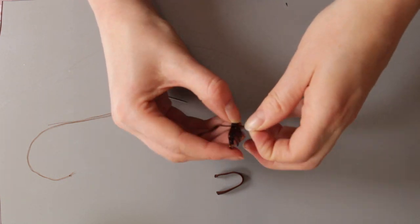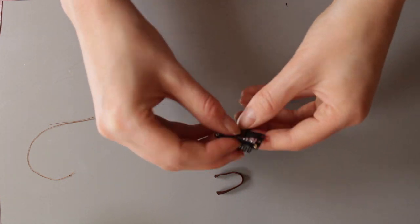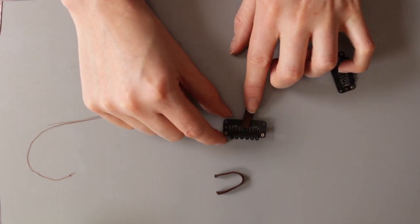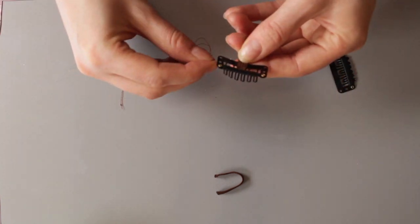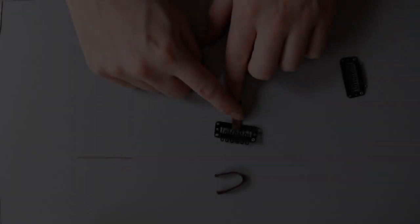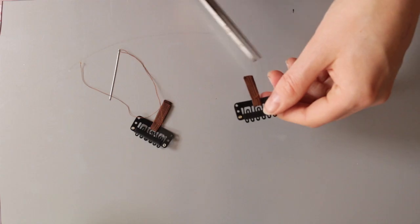The next thing you're going to do is feed the elastic through the snap clip and then you're going to secure it in place by sewing along this line with a needle and thread. Once you've done that you're going to do the same again with the other clip.